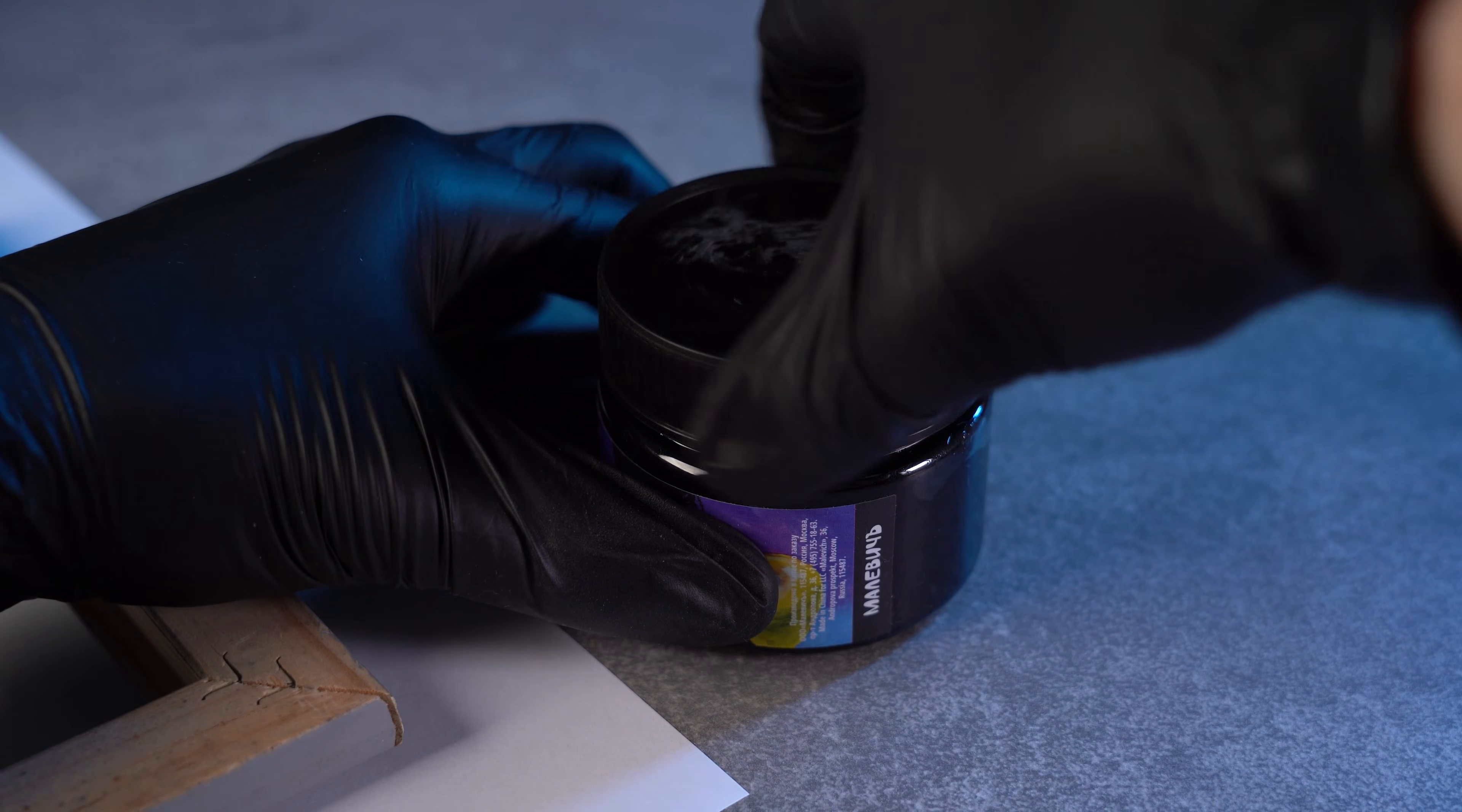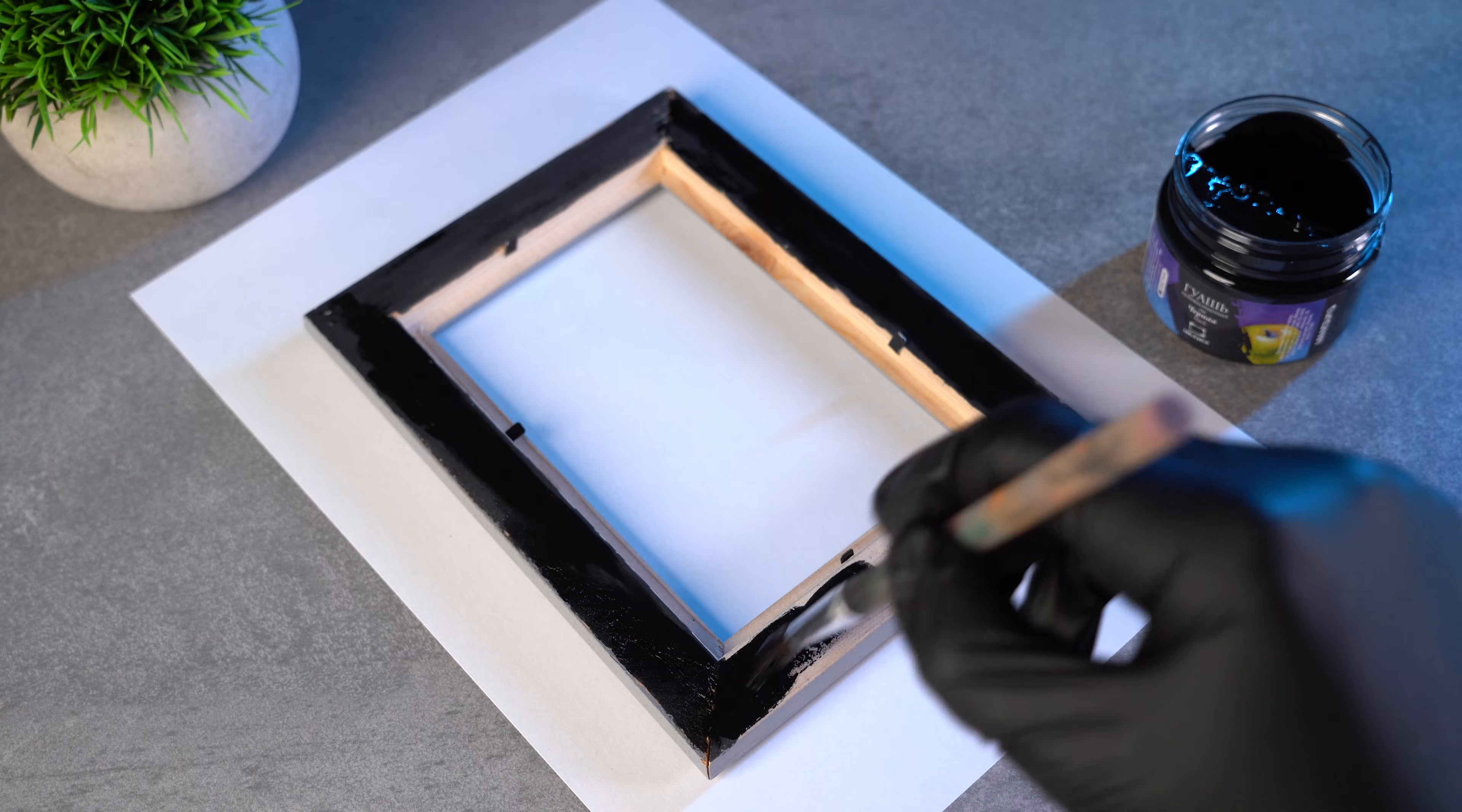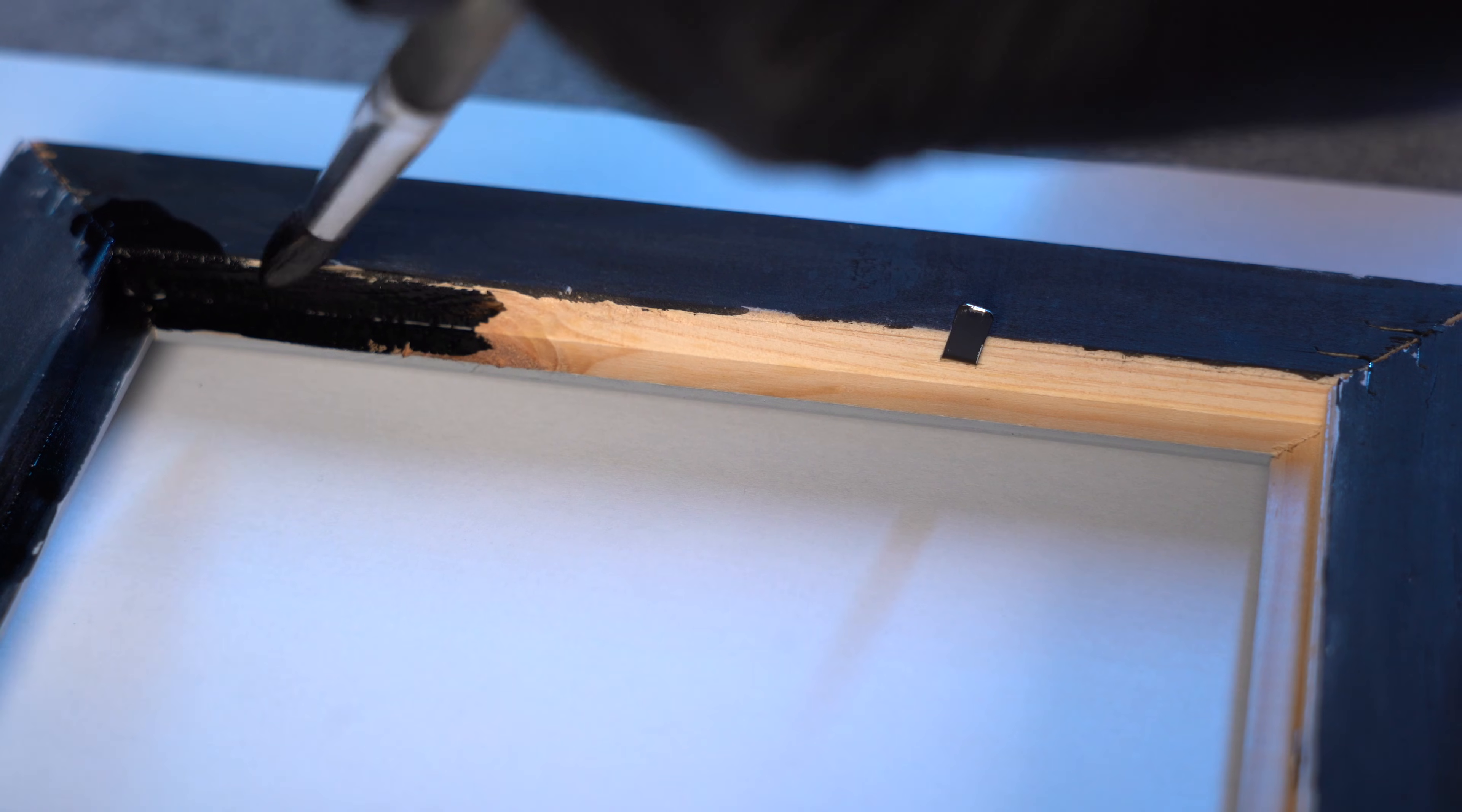I use gouache, but any paint that works on wood and paper will do. Acrylic works great too. Paint the whole back evenly, without leaving any gaps. Make sure to cover the inner groove as well, the one where the glass and the photo normally sit.